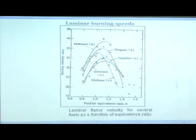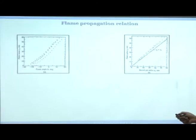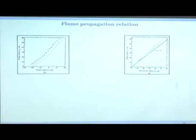Methanol flame speeds are the fastest, and iso-octane is slightly lower than gasoline. Another figure shows flame radius versus crank angle for four different engine cycles. It is very clear that in a spark ignition engine there is a lot of cyclic variability. If there were no cyclic variability the curves should exactly overlap, but they clearly differ — as crank angle increases, the flame radius increases but varies between cycles.